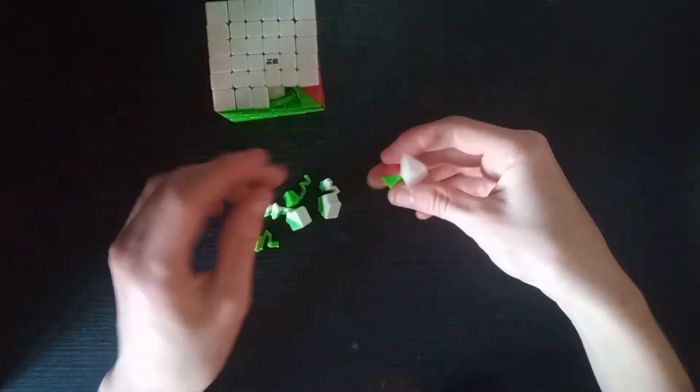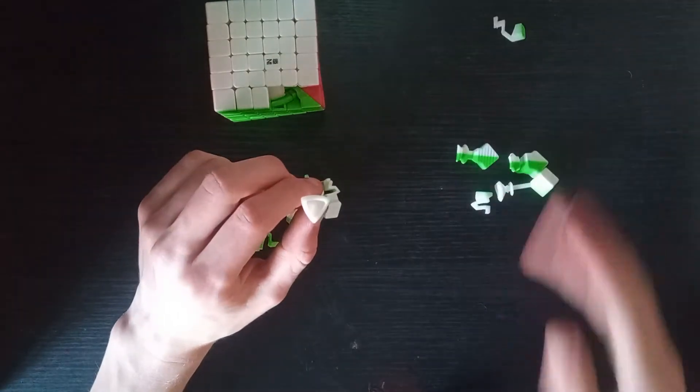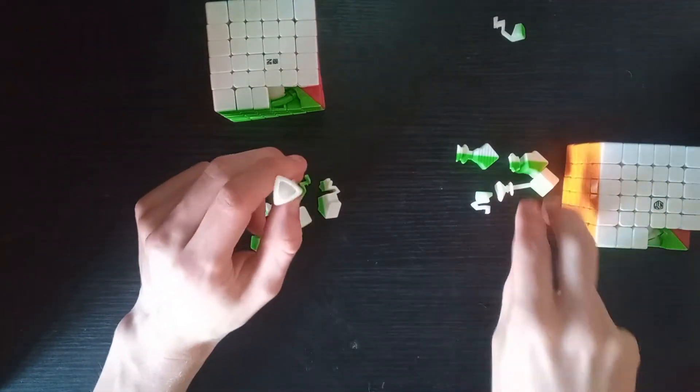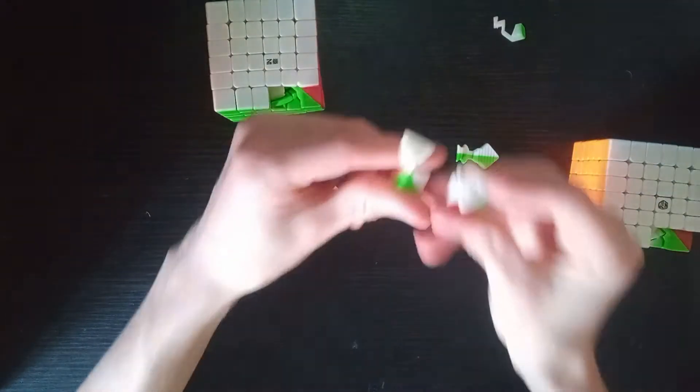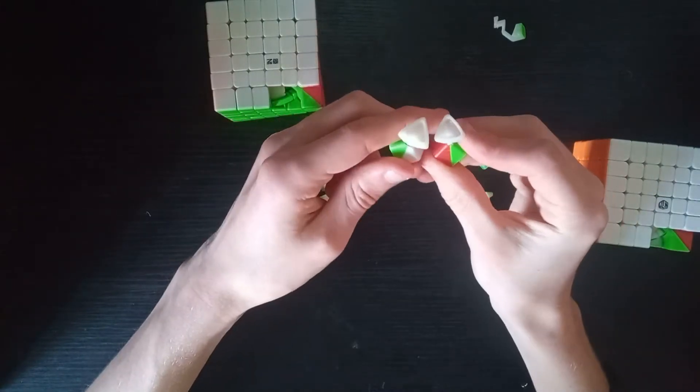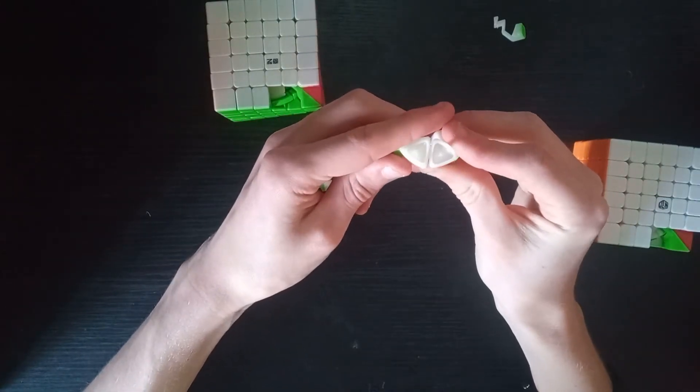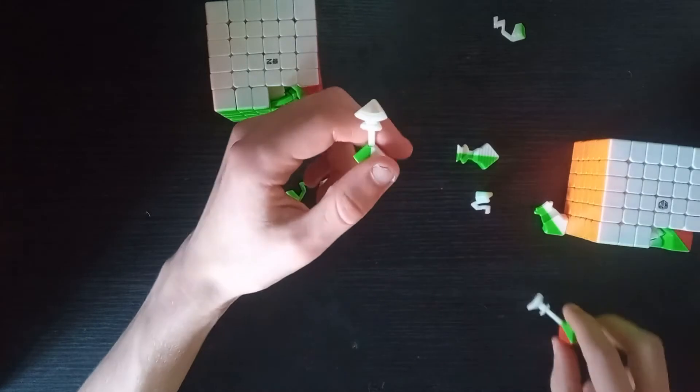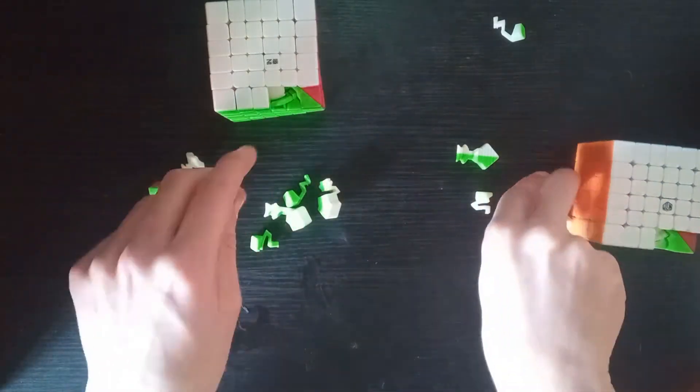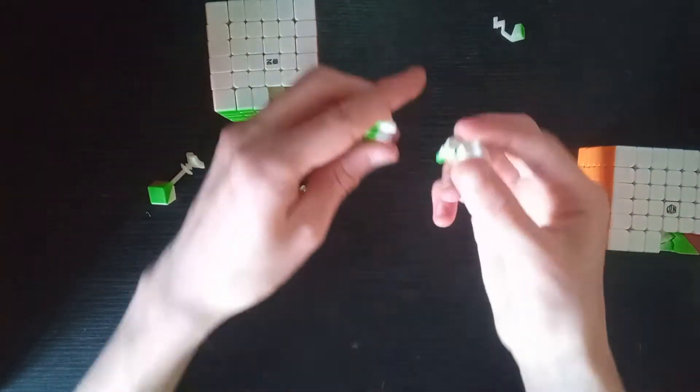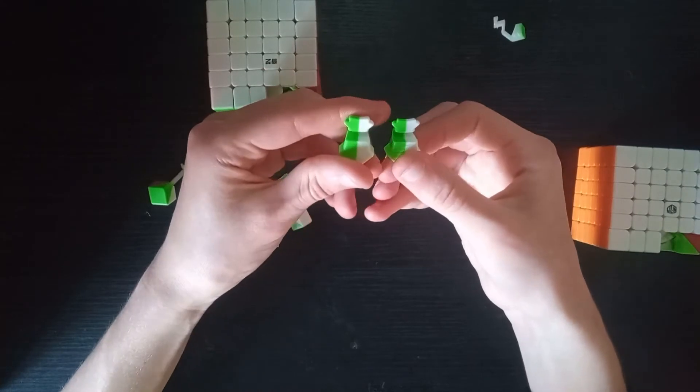So the mechanism is actually the exact same as the Shadow V2. So you can see here, the corner piece is basically the exact same, maybe slightly different on the corner, but not much. You can see here that these pieces are basically the exact same thing.